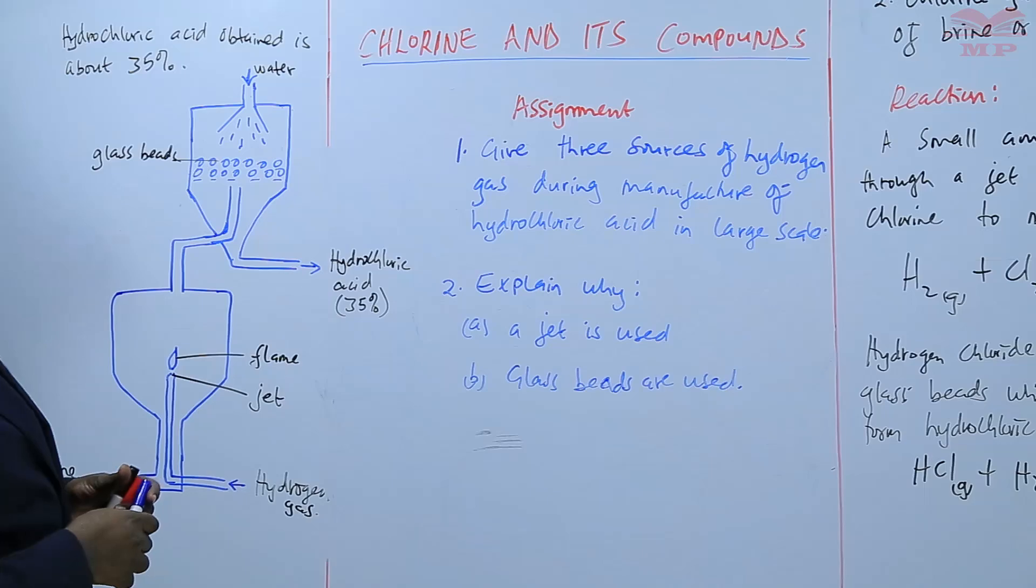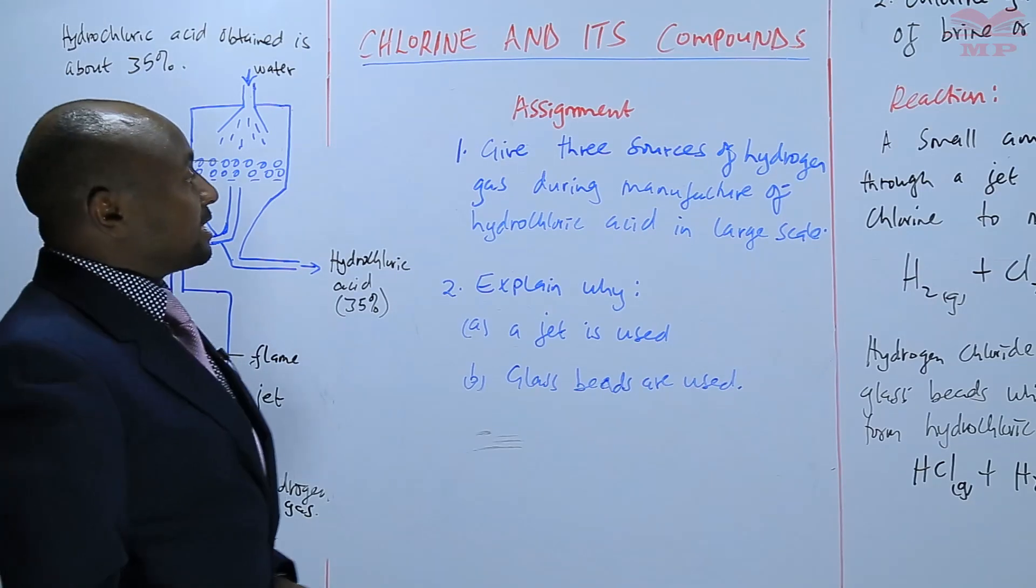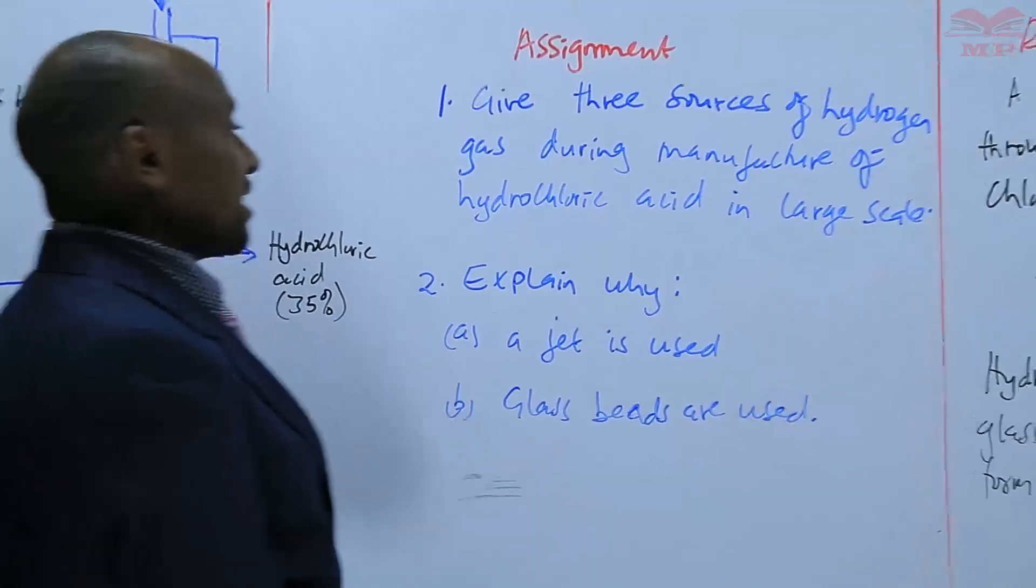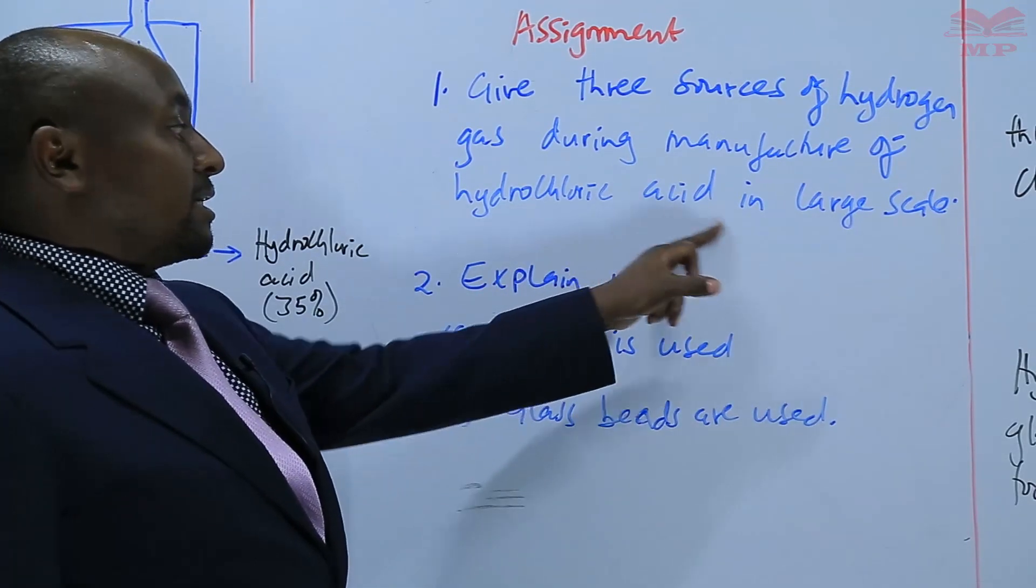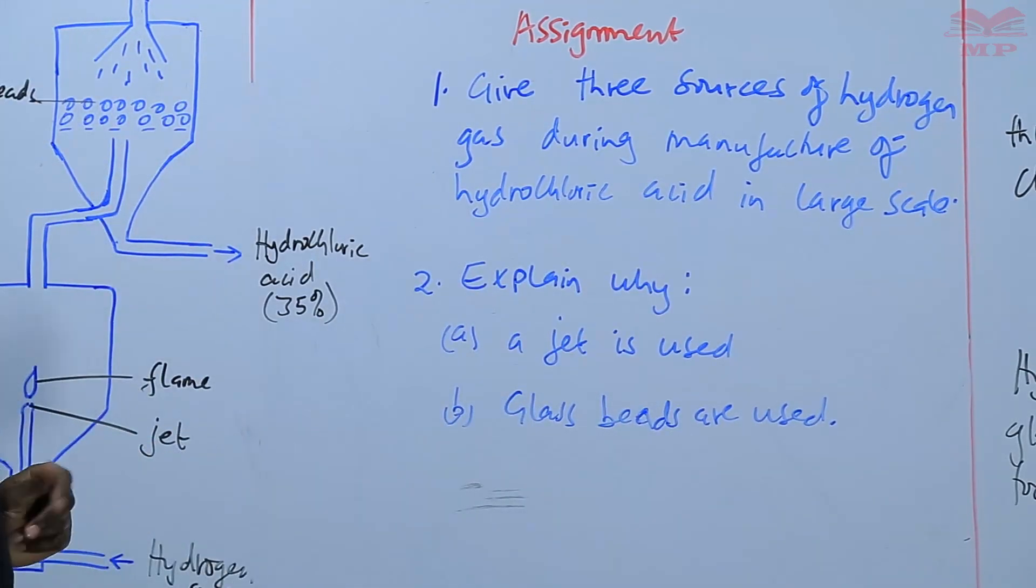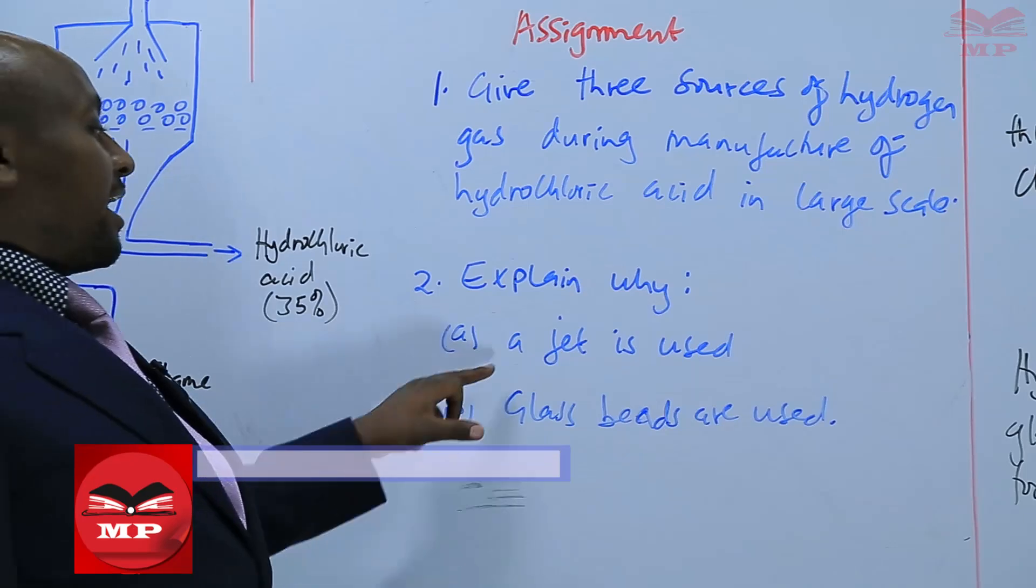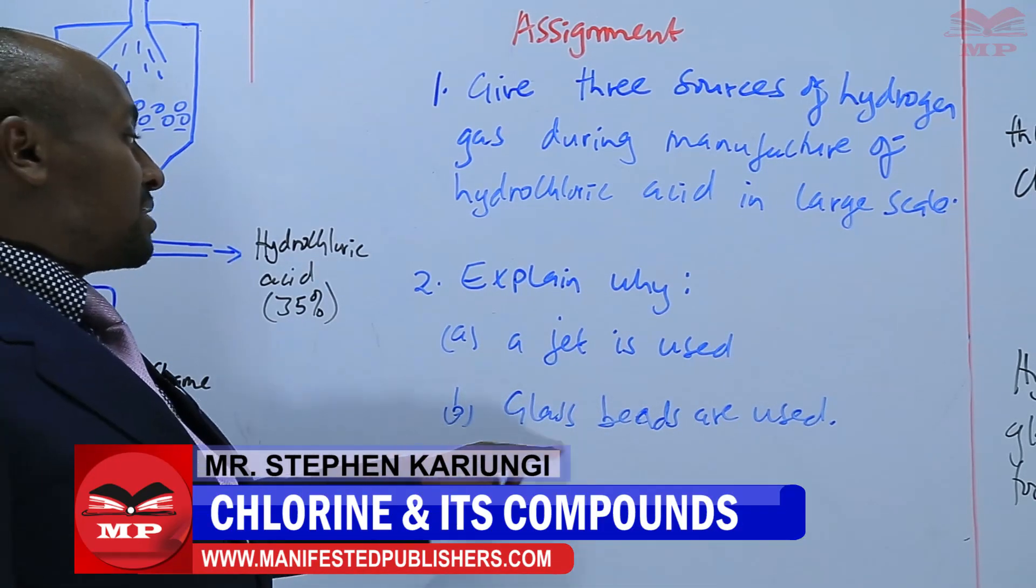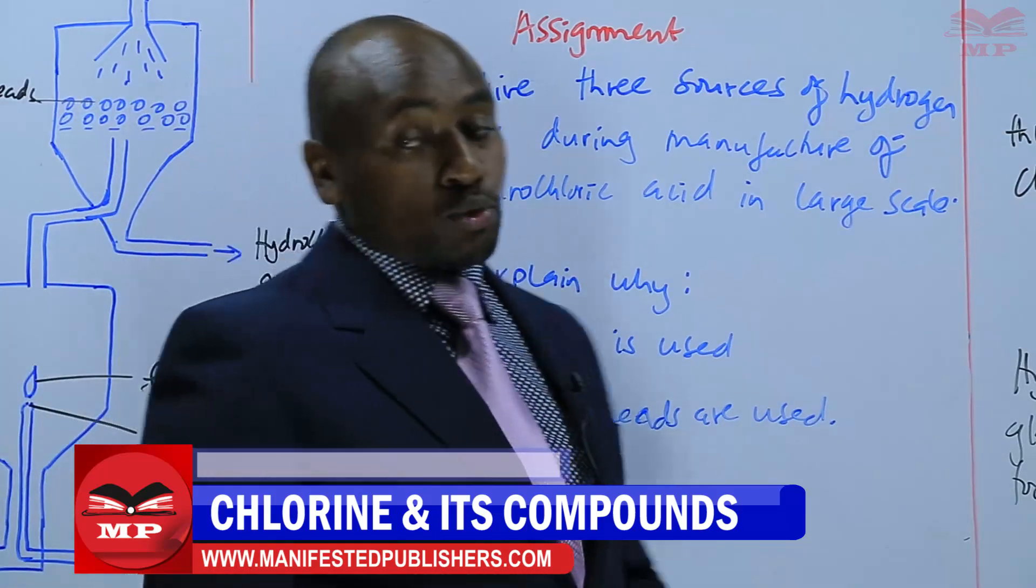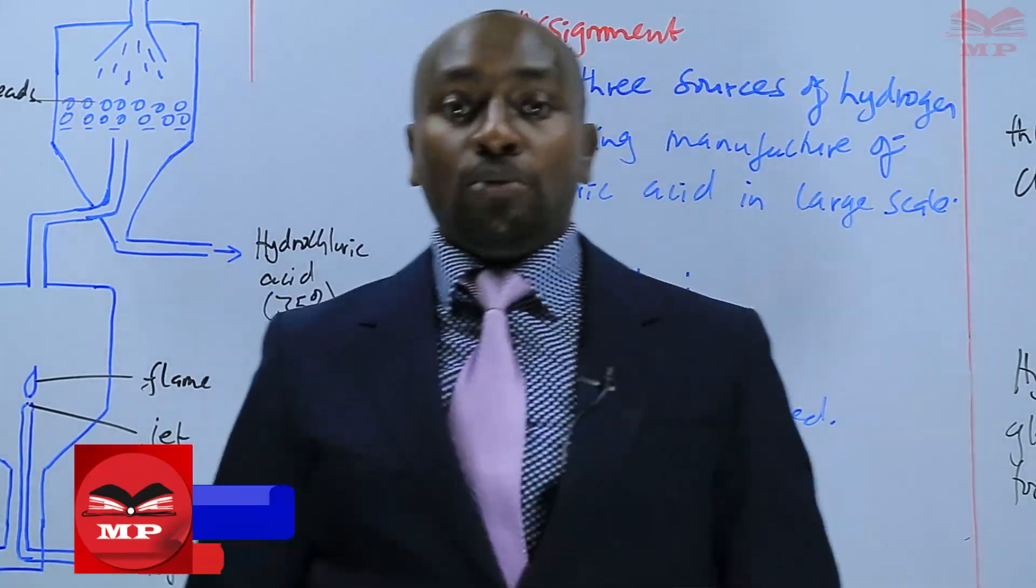So the assignment for today: number one, give three sources of hydrogen gas during the manufacture of hydrochloric acid in large scale. Number two, explain why a jet is used and also why glass beads are used in the above process. So we'll stop there until next time, goodbye.